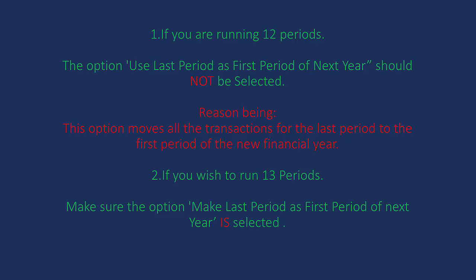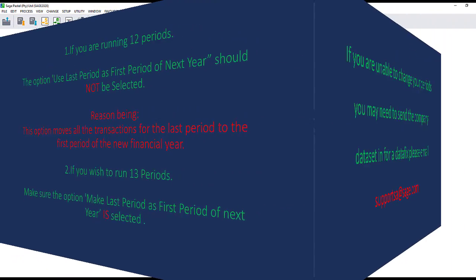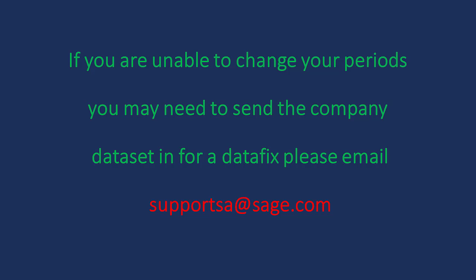Based on the above: if you only want to run 12 periods, do not select the option 'Make last period as the first period of next year.' If you do wish to run the 13th period, do select that option. If this option is not set up correctly, you may find that your periods are incorrect after running the year end.